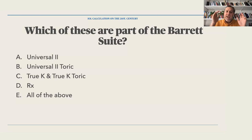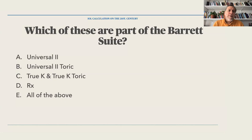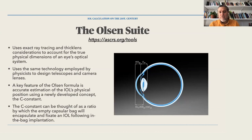If a topographer doesn't come with the biometer, measurements must be done on a separate machine — a topographer, Pentacam, or anterior chamber analyzer. When the biometer incorporates a topographer (not just a keratometer), it provides more complete information for corneas that have had prior surgery.